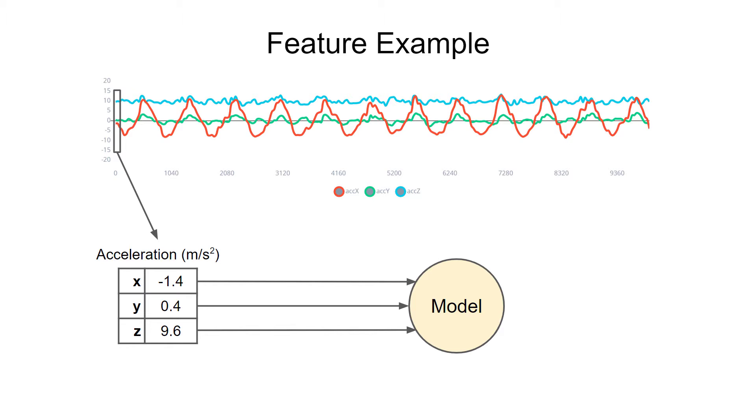We would use these features and associated labels to train the model. When it's done training, the model would once again look for three features as inputs and use those three features to try to predict the class that they belong to. Do you think that these features make for a good feature set for our model to predict these particular motions? Why or why not?